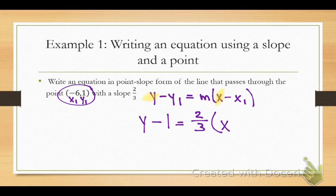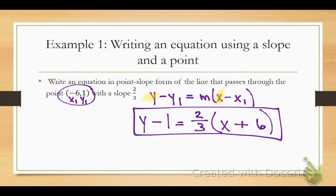According to my ordered pair, what was my x1 value? My x1 is negative 6, so when I subtract a negative 6, what happens? It's a positive 6. And there's my equation.